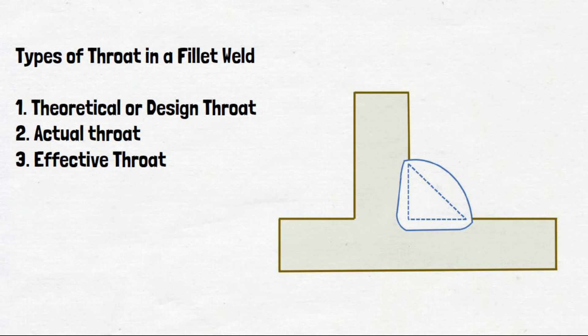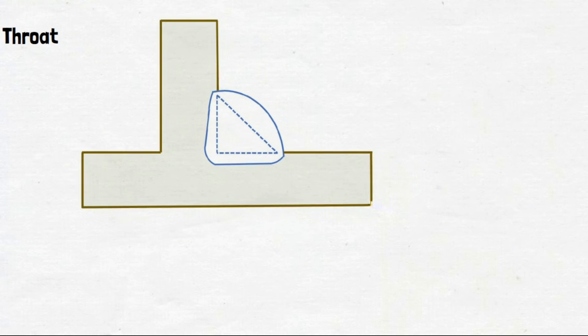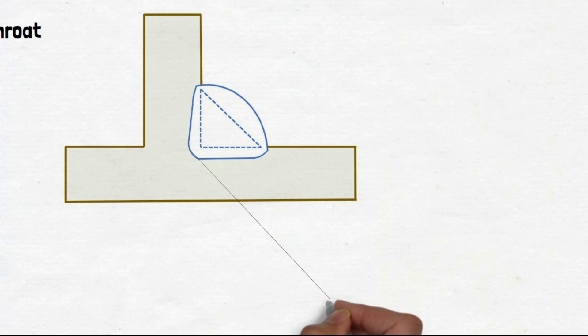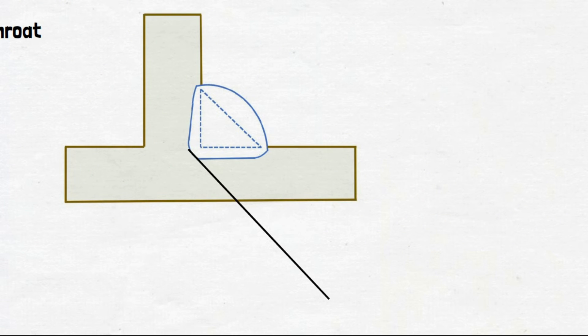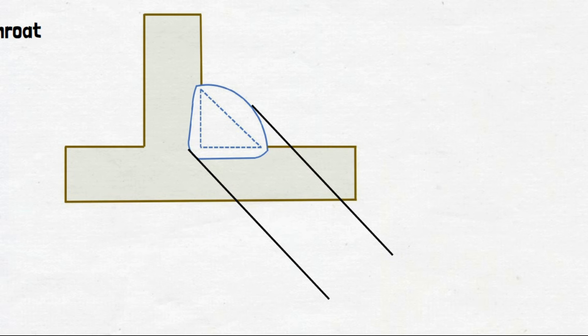Design throat is what is given in the drawing. Actual throat is due to weld profile. Effective throat of the fillet weld is the main area that withstands the stresses.